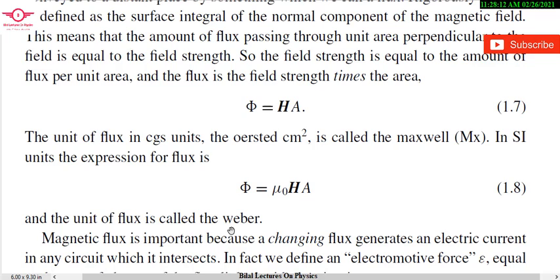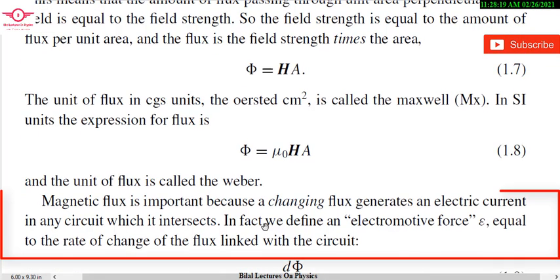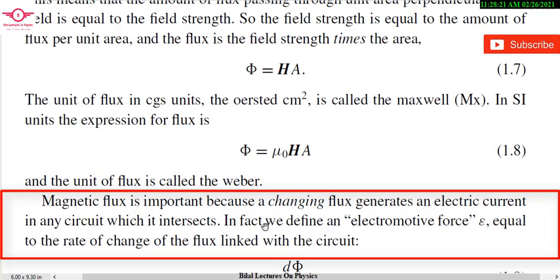Next, we discuss how changing flux creates electric current. Magnetic flux is important because a changing flux generates an electric current in any circuit it intersects. Suppose magnetic field lines pass through a region — a change in those field lines produces magnetic flux, and that changing magnetic flux produces an electric current in the opposite direction to the magnetic flux.